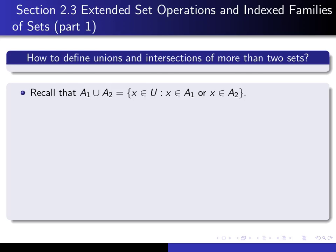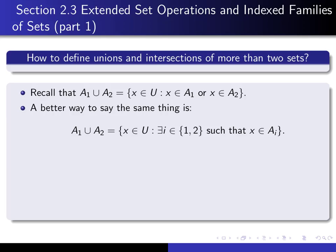In order to make it easier to generalize to more than two sets, here's the working definition of the union of two sets A1 and A2. It's the set of all X in our universal set such that X is an element of A1 or X is an element of A2. A better way of saying the same thing is: it's the set of all X in our universal set such that there exists an index I, that's either 1 or 2, such that X is an element of A sub I.